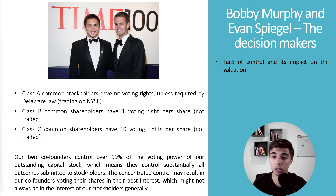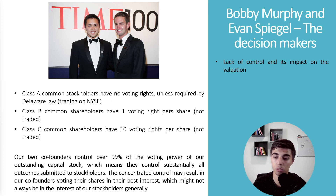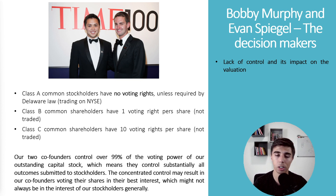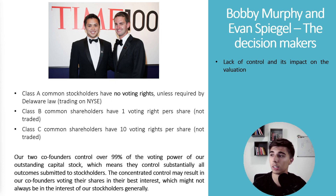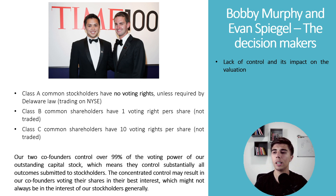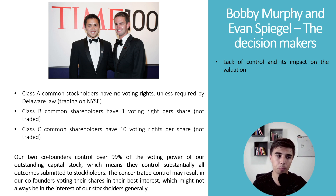Their concentrated control covers all outcomes submitted to stockholders, including the future direction of the company and dividend decisions. In my valuation approach, I will value the company as if every shareholder has voting rights, and then subtract 15% for the lack of control. I hope that makes it clear, but if you have any questions please let me know in the comments below.